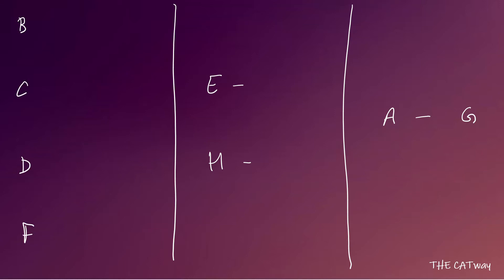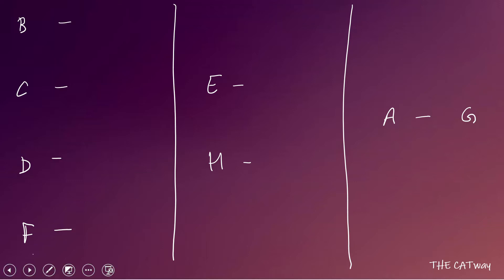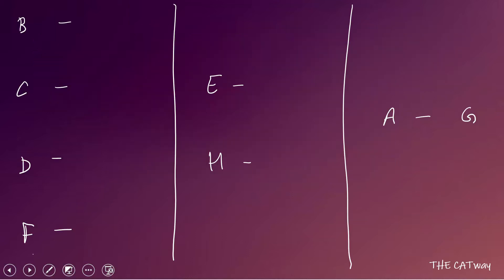Because B, C, D, and F cannot play against each other, and they each played only one match, whatever total goals they scored in the complete tournament were all scored in the quarter-finals. So B scored 2 goals, C scored 4 goals, D scored 1 goal, and F scored 5 goals.